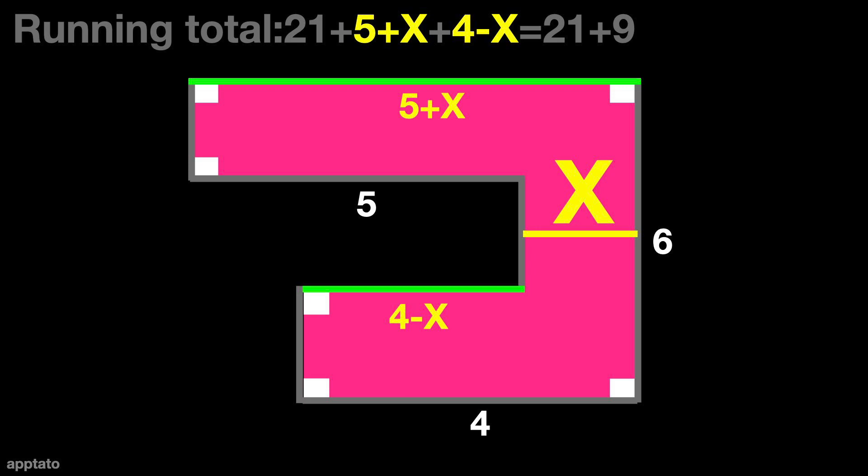We go back to our running total of 21 and add the missing sides. The x cancels out, leaving 5 and 4 added to 21. Therefore, the perimeter of the shape is 30.